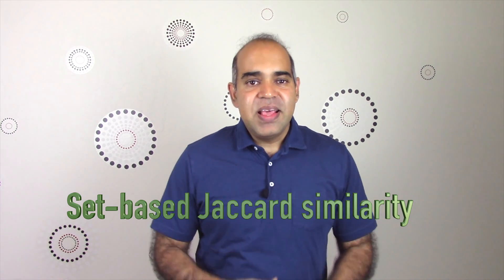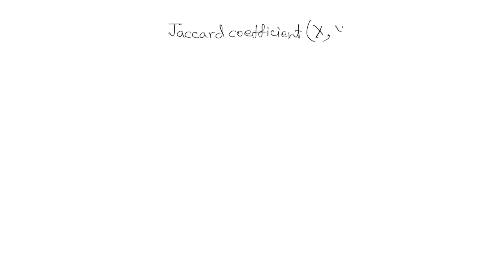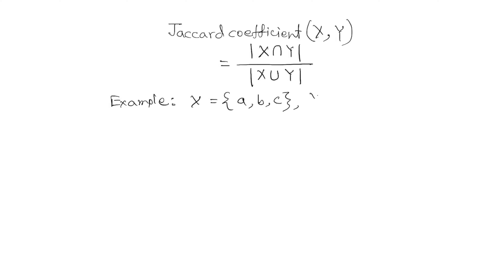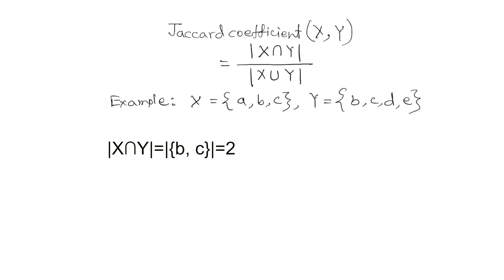Jaccard similarity between two sets is a ratio of commonality between the two sets over all the items. If x and y are two sets, the Jaccard index is computed as the ratio of the size of the intersection between the two sets to the size of the union of the two sets. For example, let us say x has the elements a, b, and c, and y has the elements b, c, d, and e. The intersection of x and y is b and c, and the length of this intersection is two.